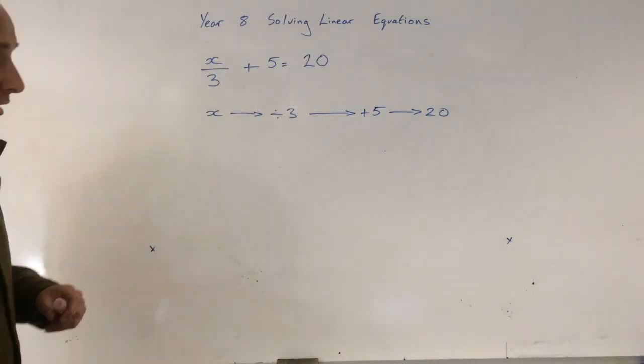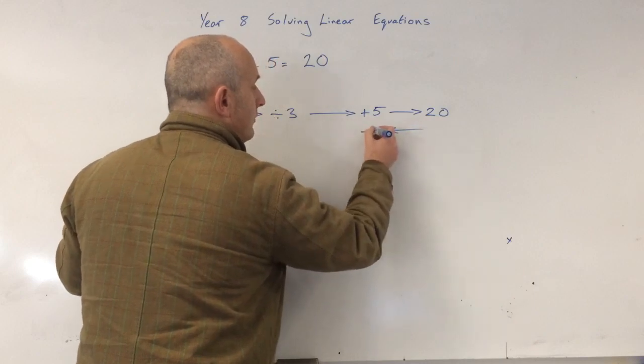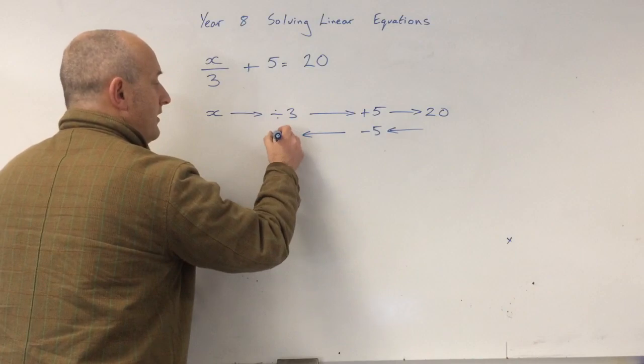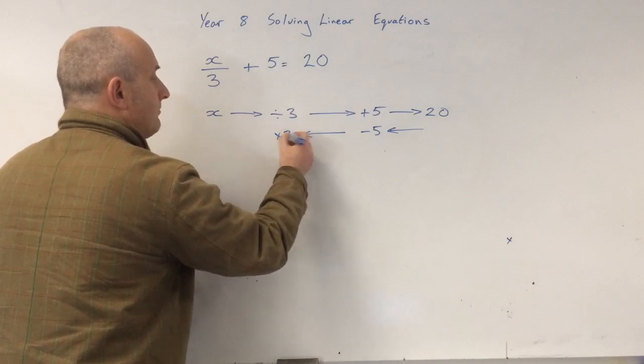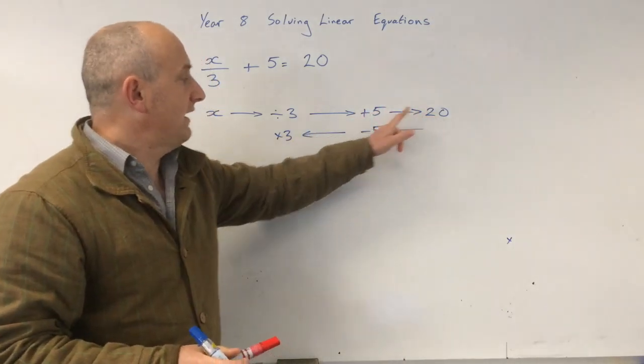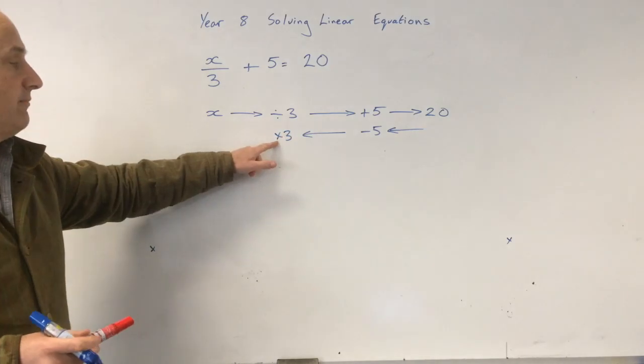So now let's do the inverse. So we need to minus 5, and then we need to multiply by 3. So now let's do this. 20 minus 5 is 15, multiplied by 3.